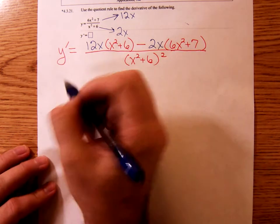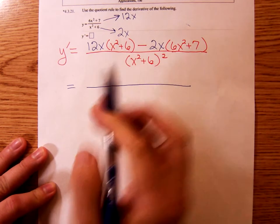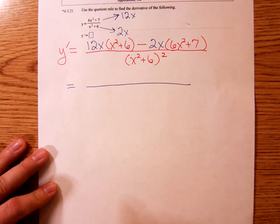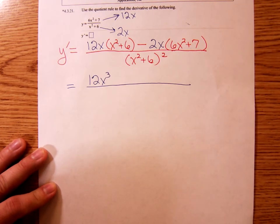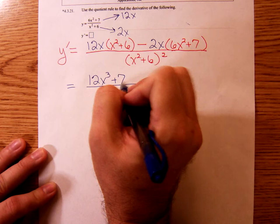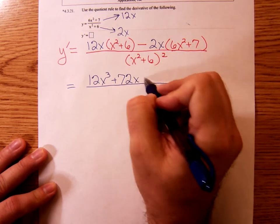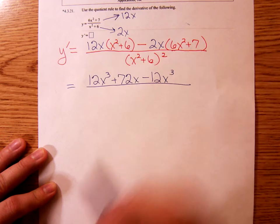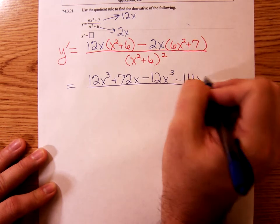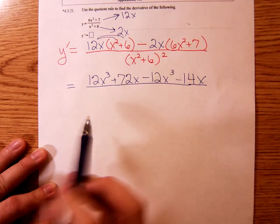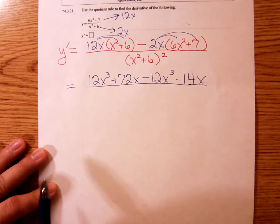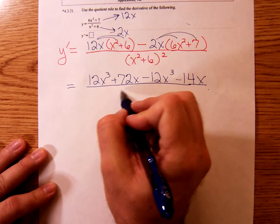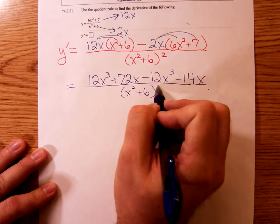So now we're going to go through. Distribute the twelve x over the x squared plus six. That'll give me twelve x cubed plus seventy-two x. Minus twelve x cubed - hey, this is working out very nicely - minus fourteen x. We took the twelve x times those two terms. We took the negative two x times those two terms.